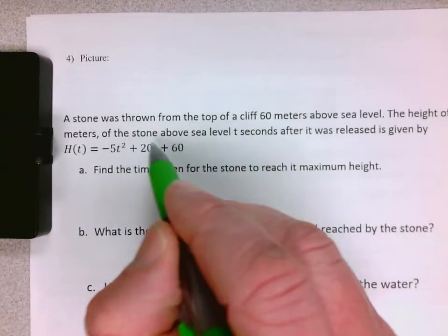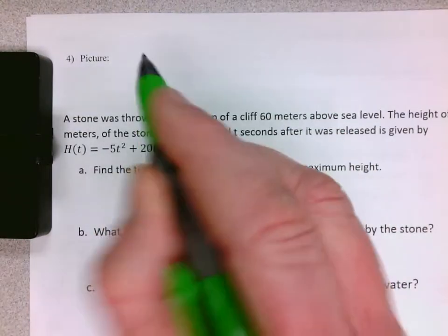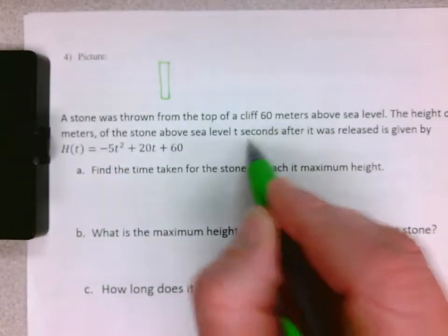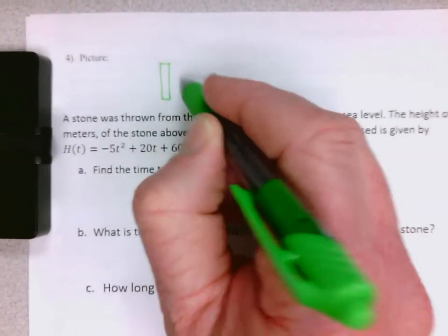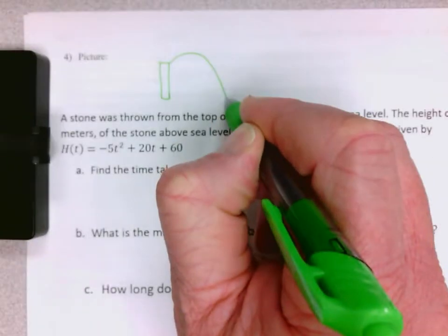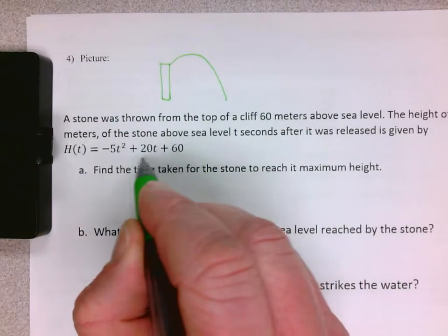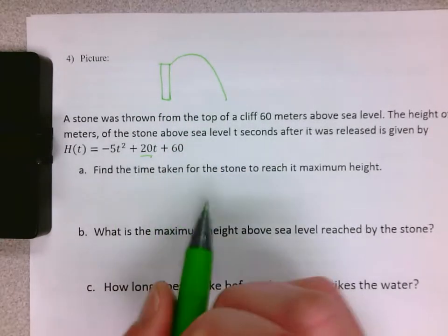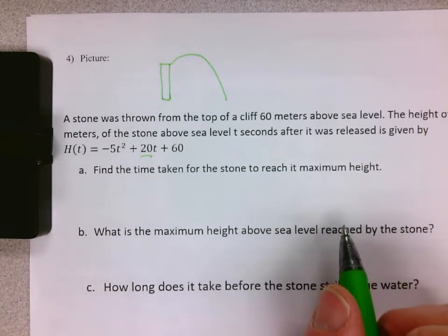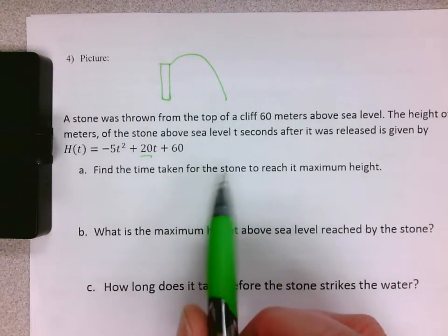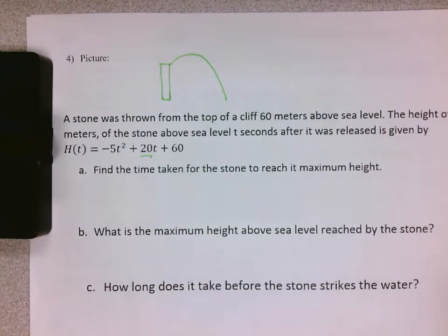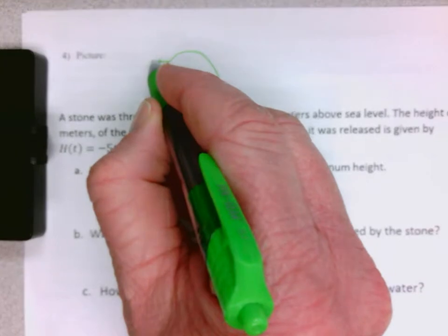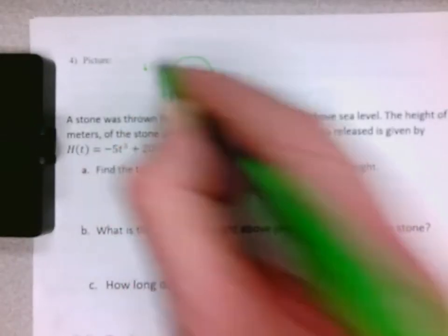So a stone was thrown from the top of the cliff. I'm making a picture - I've got a cliff, that's my y-axis. The stone was thrown up in the air, not straight down - I know that because the number there is positive. So it was thrown up, gravity is pulling back down, and there's an equation for gravity here. It must be a different planet; it doesn't have the same coefficient we're used to. 60 meters above sea level, so right here was 60.